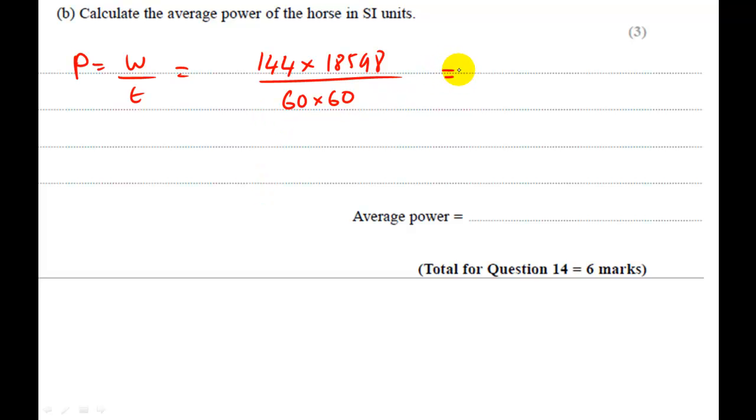Okay, so calculating that again. Be careful you don't make any BODMAS errors when you do these things. If you really have to, calculate the top line, put the answer here. Calculate the bottom line, put the answer here. And then divide them so that you don't make any errors on the calculator. Okay, so this has given me an answer of 743.92. And this is going to be in watts. And I'm going to put my answer here as 744 watts.